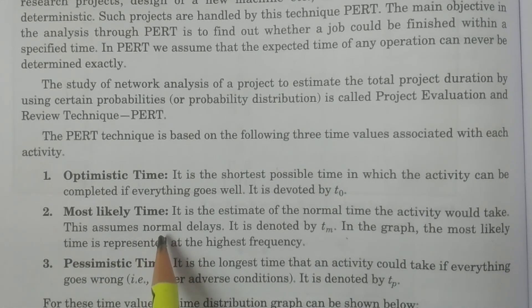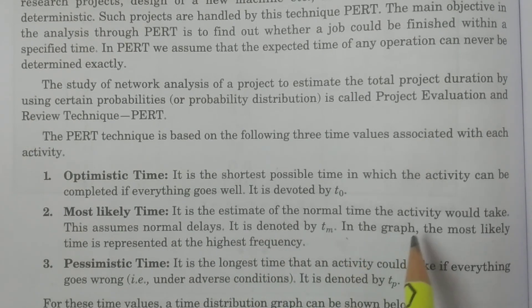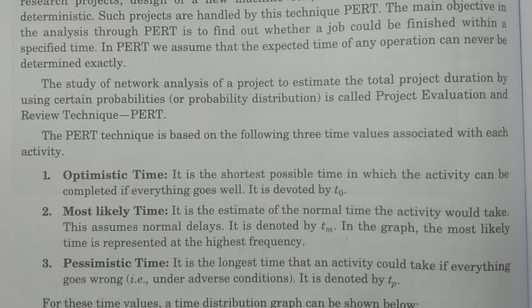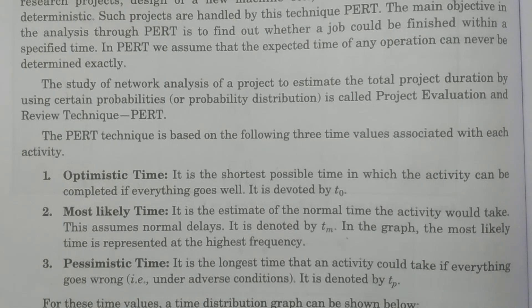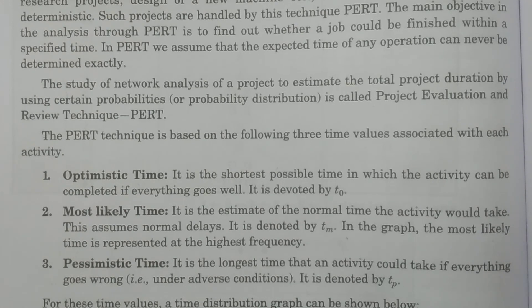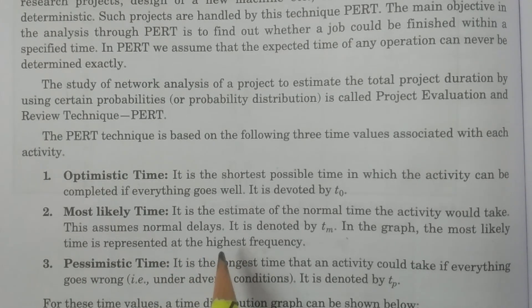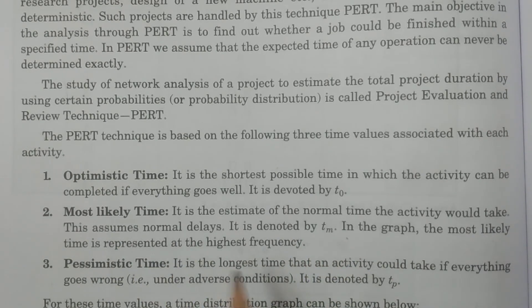Most likely time is the estimate of the normal time of the activity when the activity is going to be finished, and it assumes normal delays. For example, if 10 workers are to finish a work in 10 days and it goes well for four days, but on the fifth day only three or four workers attend, some delay takes place. Such normal delays are considered here, and this estimate of normal time is called most likely time, denoted by Tm. In the graph, it is represented at the highest frequency.